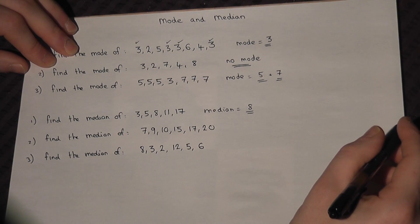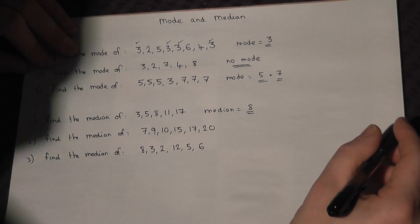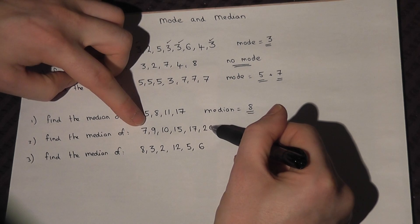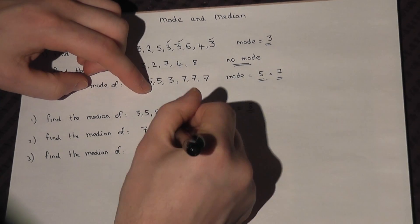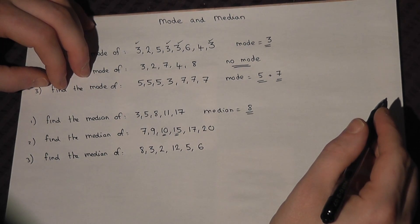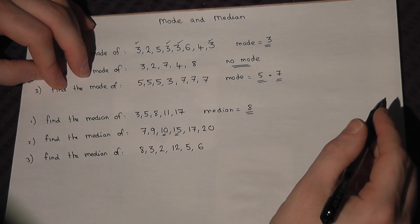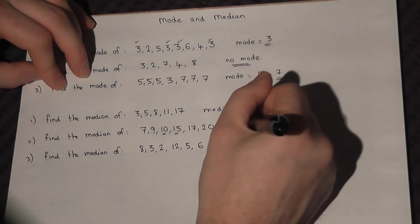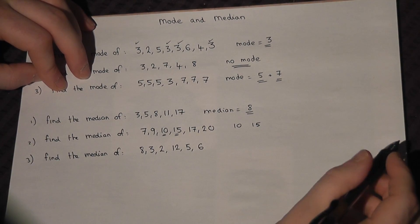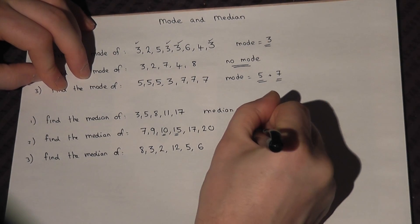Now sometimes, when you've got even number of data, for example, when you count in from the outside, you find there are two central numbers. When this is the case, we have a 10 and a 15. To find the median, we get the centre of these two numbers.